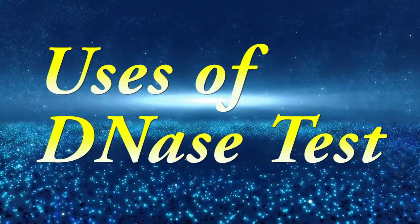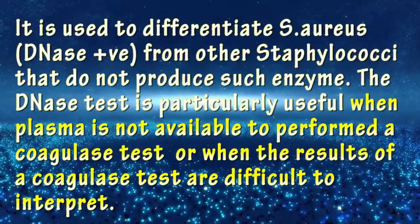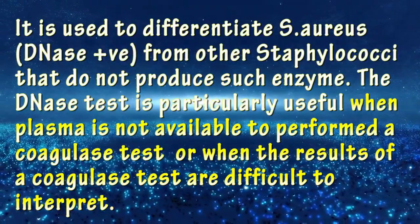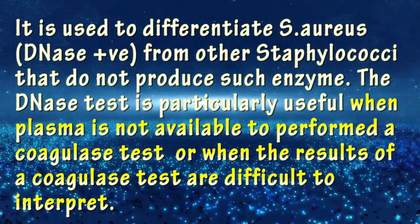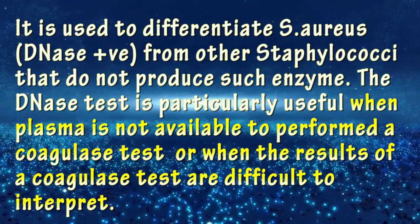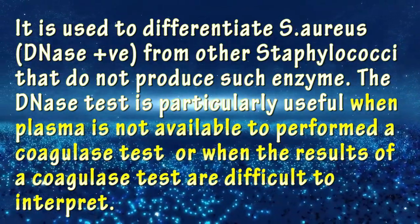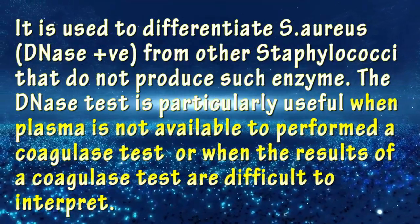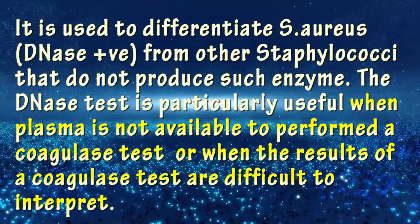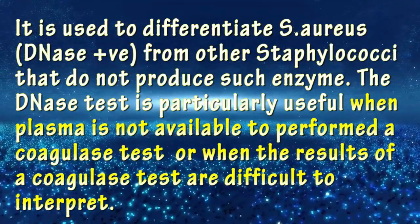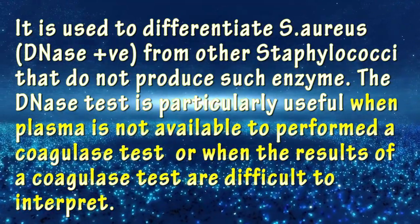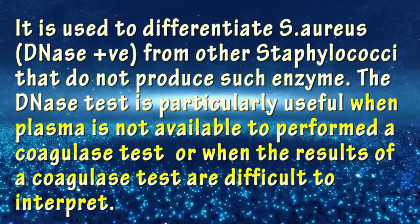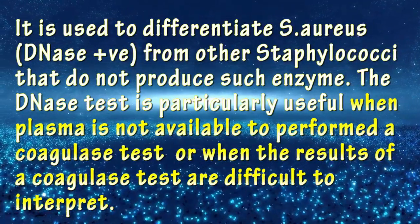Uses of DNS Test: It is used to differentiate Staphylococcus aureus from other Staphylococci that do not produce such enzymes. The DNS Test is also useful when plasma is not available to perform a coagulase test, or when the results of the coagulase test are difficult to interpret.